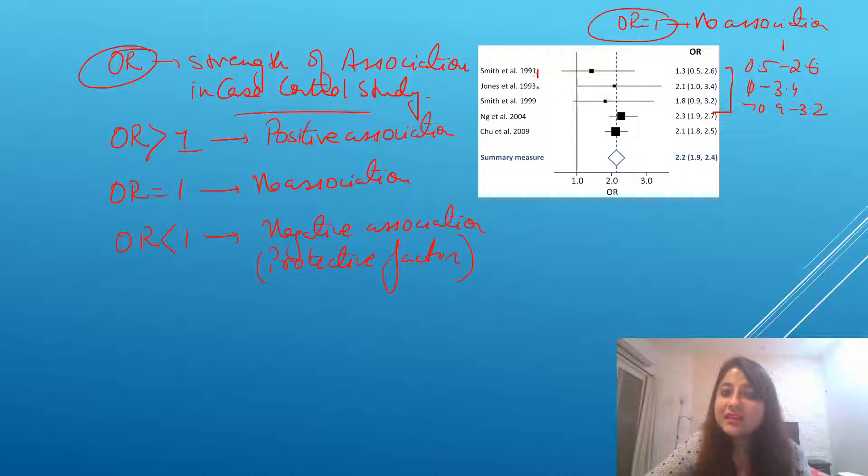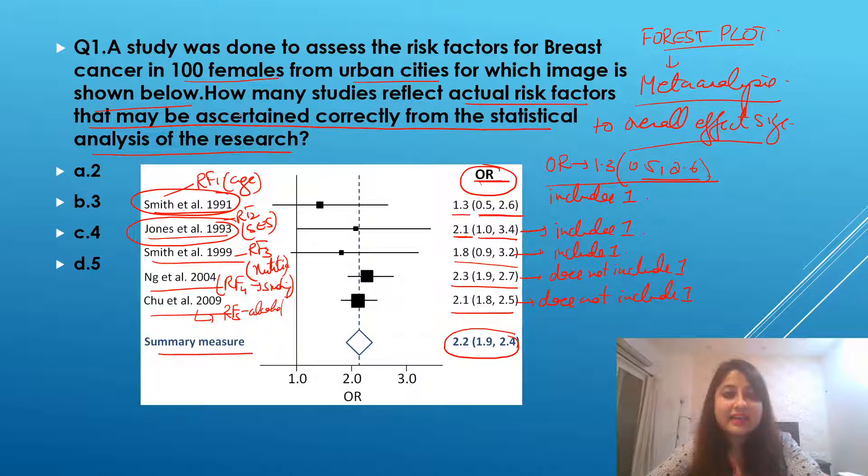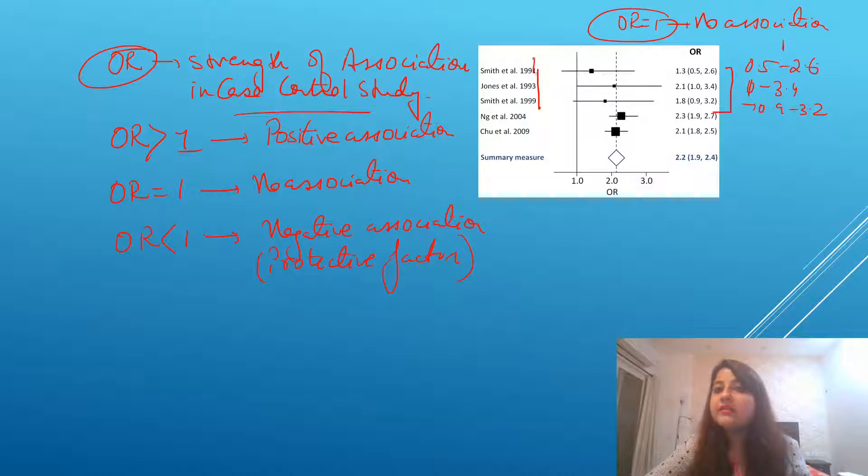So these first three studies that we see, Smith et al. 1991, Johns et al. 1993, and Smith et al. 1999 do not show any statistical significant association with breast cancer. The risk factors that we studied, we studied age, socioeconomic status, and nutrition.